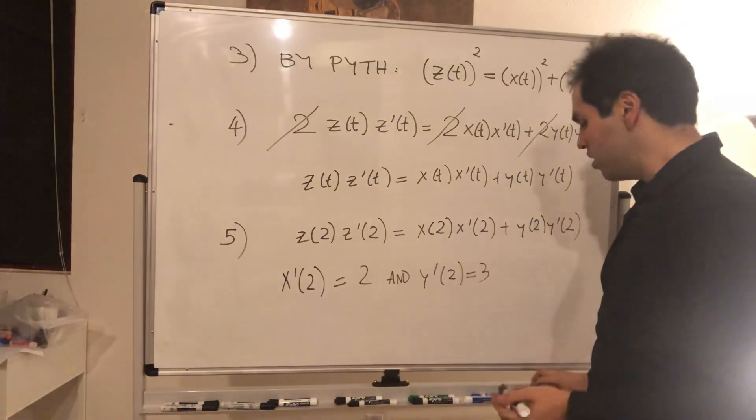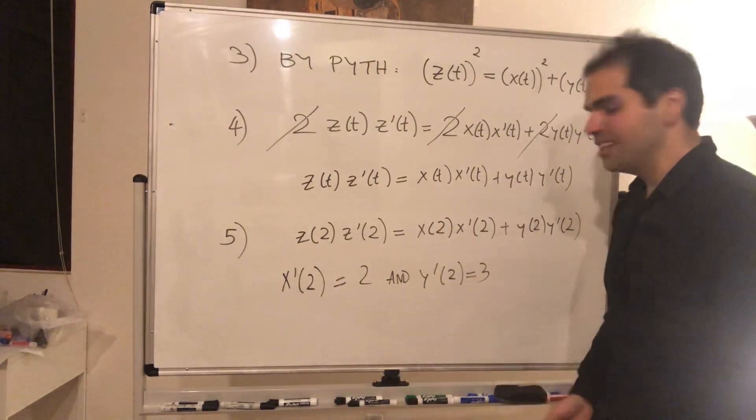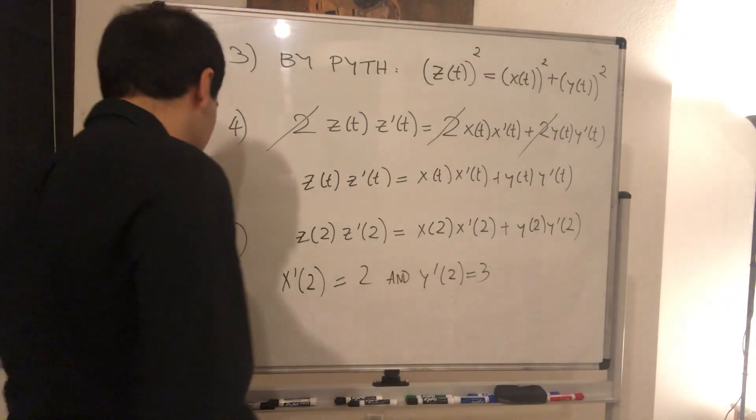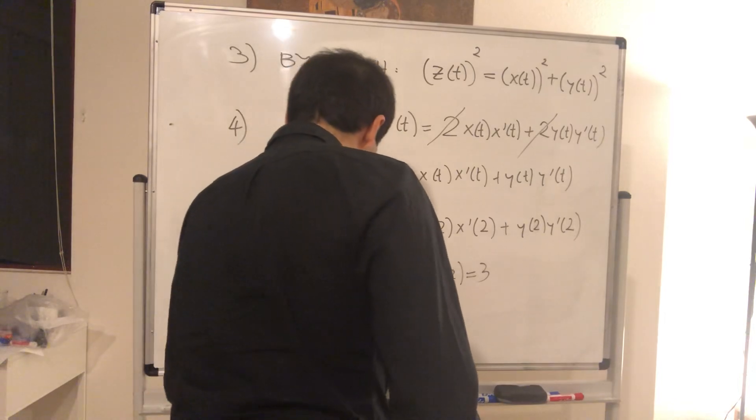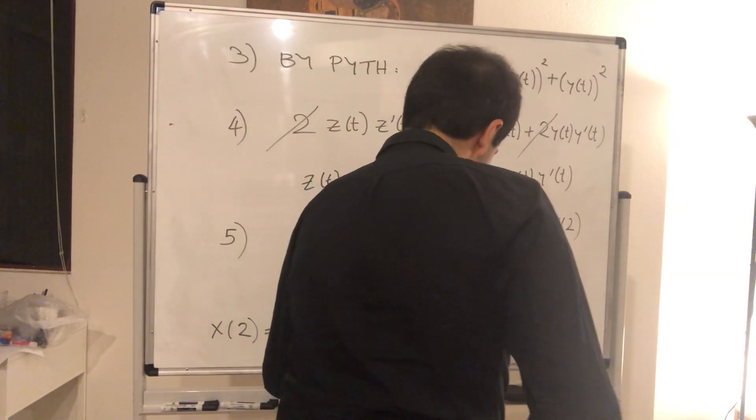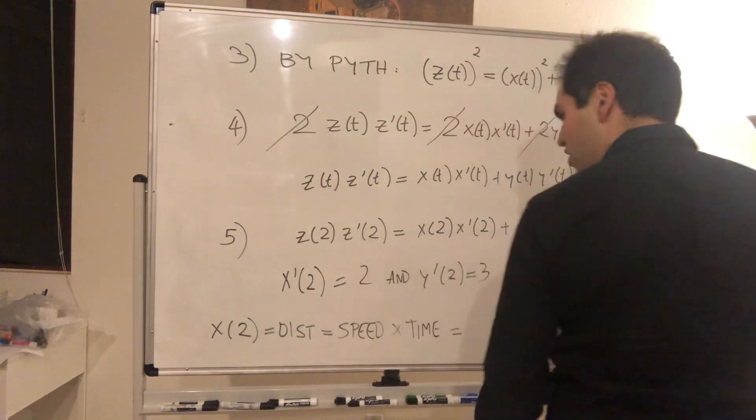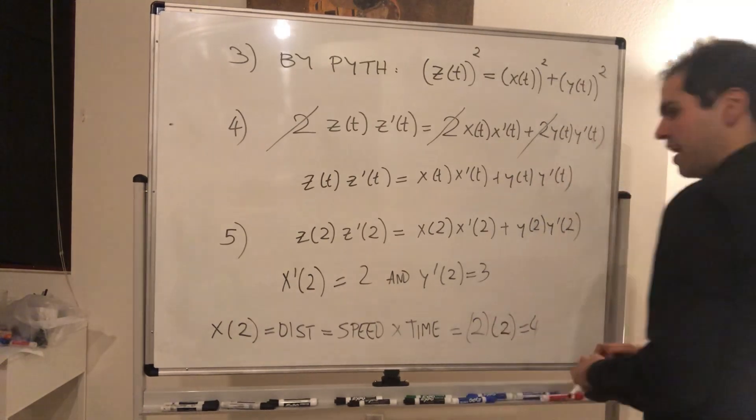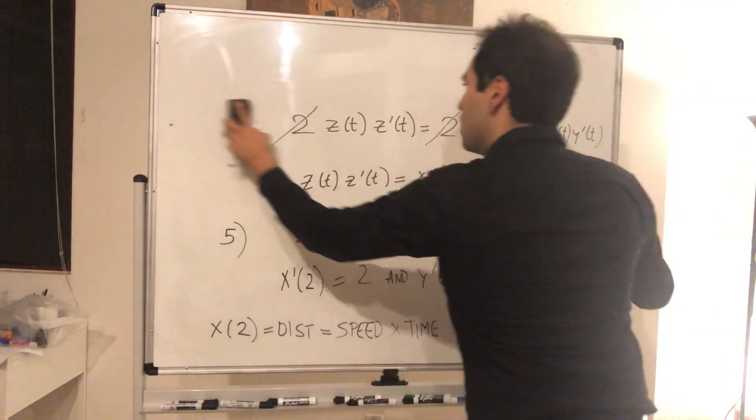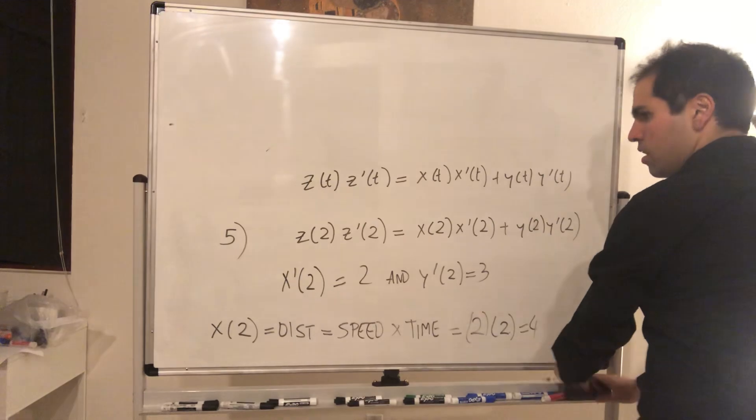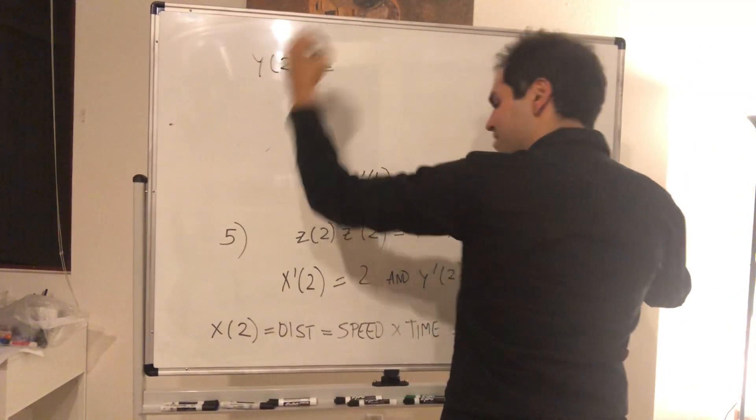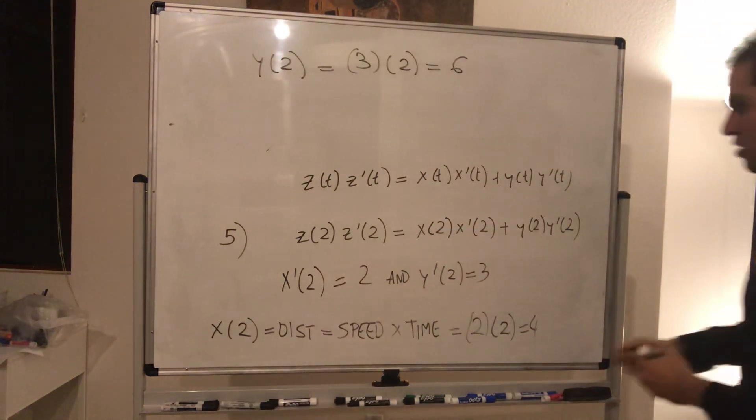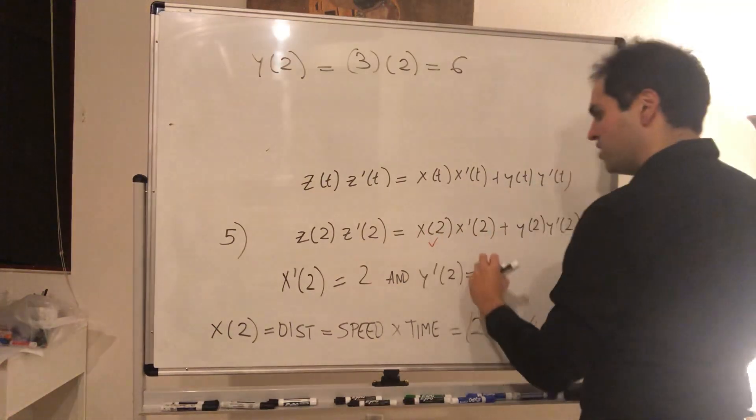But then the question is, we know what the speed of the cars are, but what about x and y, what about the distance? Well, remember your physics a little bit. So remember that distance is just speed times time. So x of two, that's distance, and that's speed times time, and that just becomes two times two hours, which is four. On the other hand, what about y? Well, y of two, same spiel, so that's again speed times time, which is just three times two, and that's six.